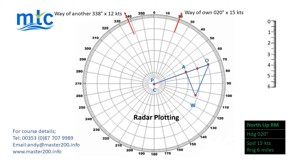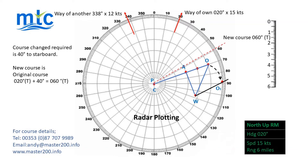In this slide, it can be seen that the course of own vessel is 020 degrees true at a speed of 15 knots, where another vessel is 338 degrees true at 12 knots. It can be seen by extending line OA, it passes through C, and the current CPA is 0 and is therefore unacceptable.